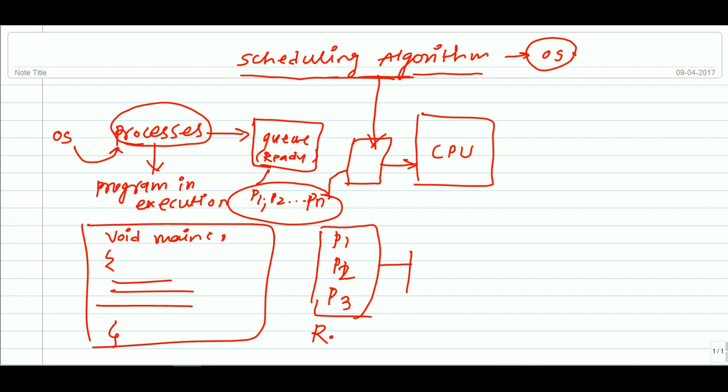ready queue for the processing. And if we apply First Come First Serve scheduling algorithm, then the process which arrives first into the ready queue will be selected for the processing to the CPU. After first, then